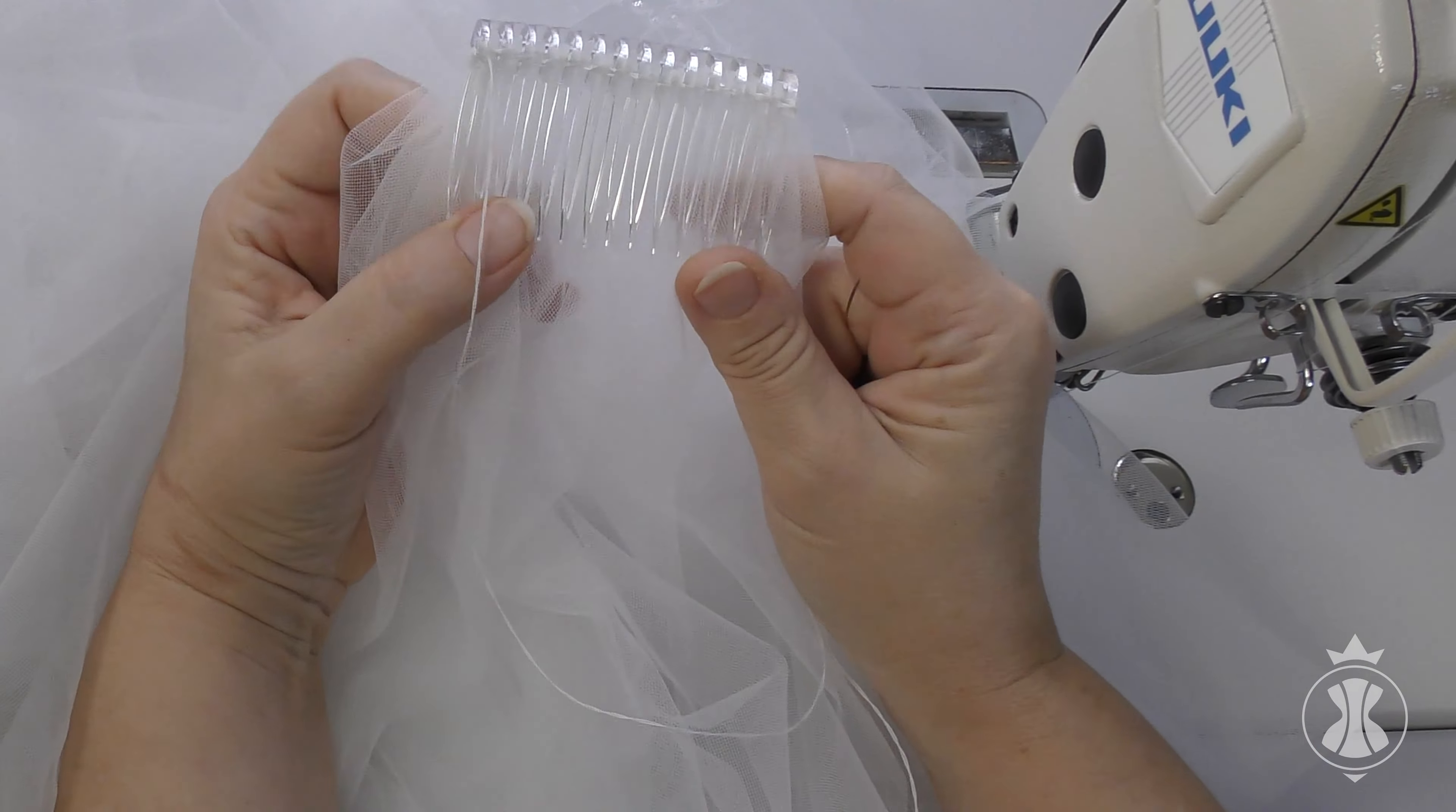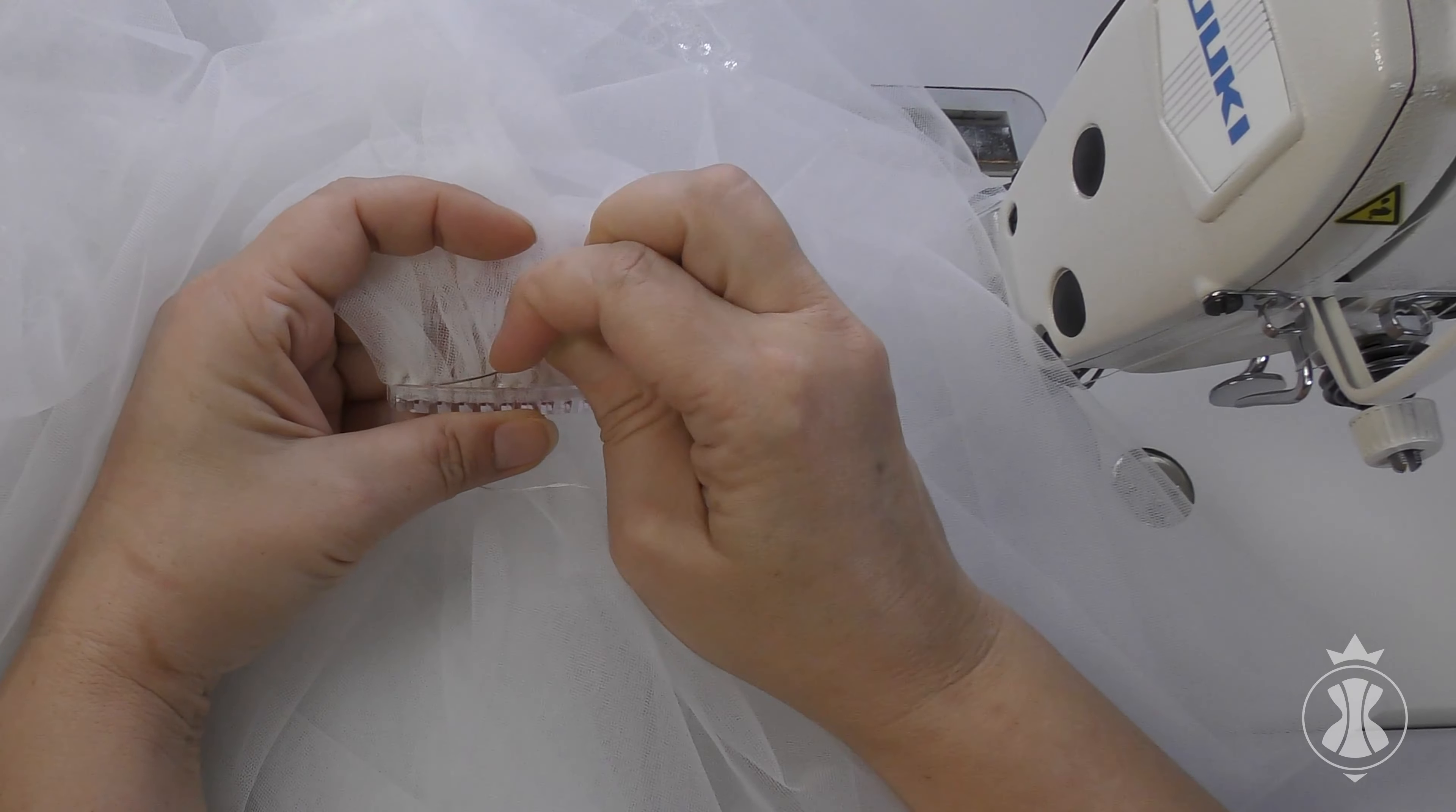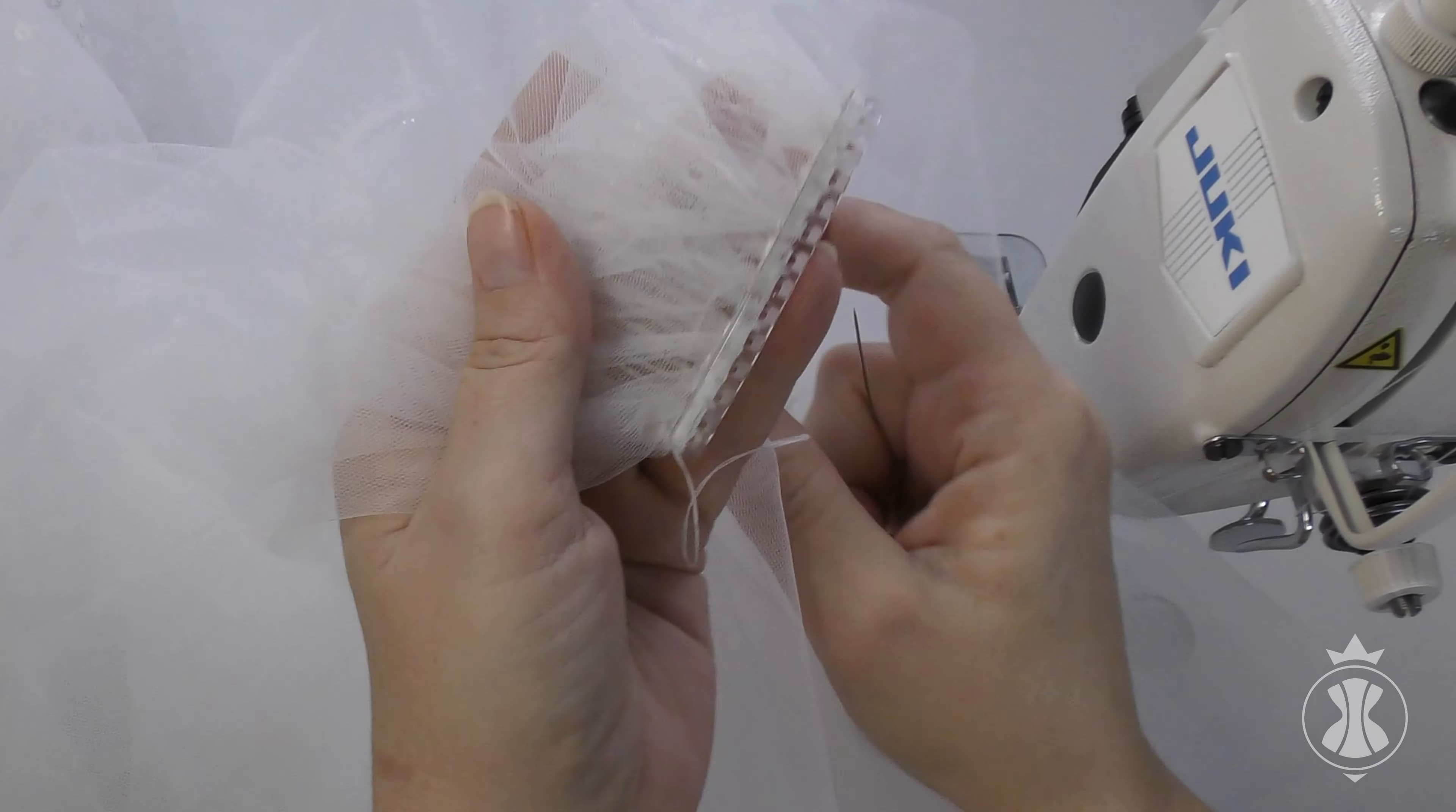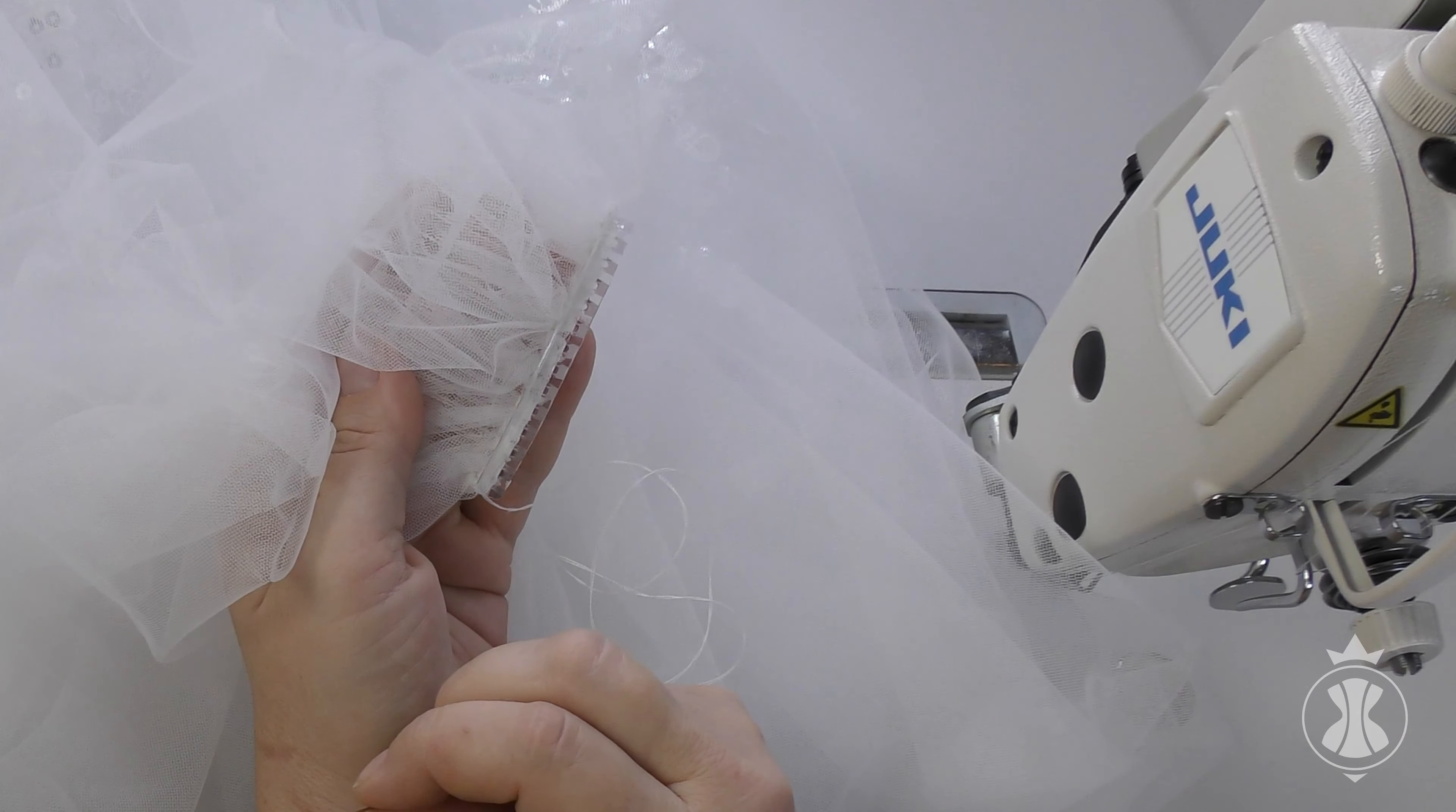In this way, the comb is securely attached and the gathering is hidden under its edge. After making the final stitch, secure the thread. You can further embellish the comb with beads, rhinestones, lace appliques, or any other decoration.